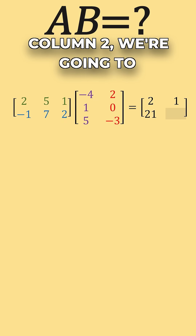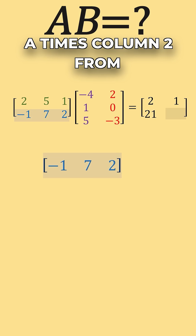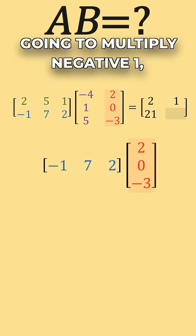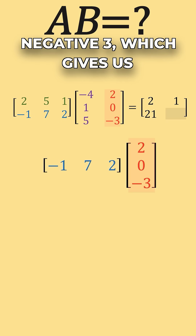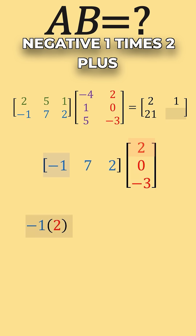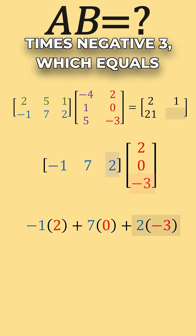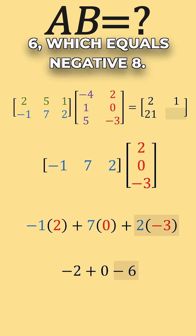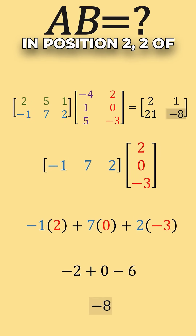To find the last value, in row 2, column 2, we use row 2 from matrix A times column 2 from matrix B. We multiply negative 1, 7, 2 by 2, 0, negative 3, which gives us negative 1 times 2 plus 7 times 0 plus 2 times negative 3, which equals negative 2 plus 0 minus 6, which equals negative 8. So negative 8 goes in position row 2, column 2 of our result.